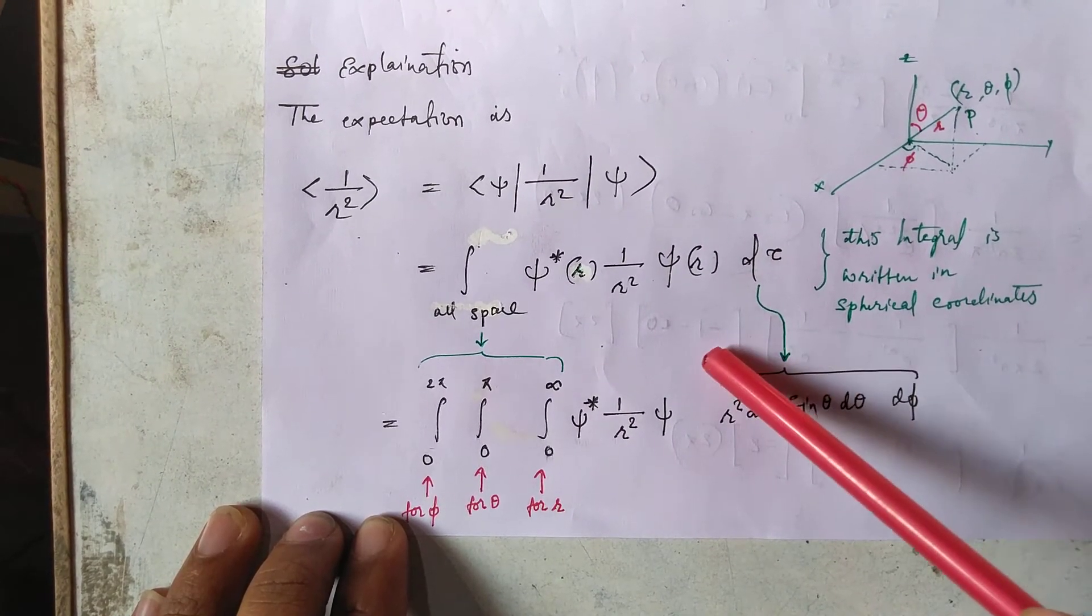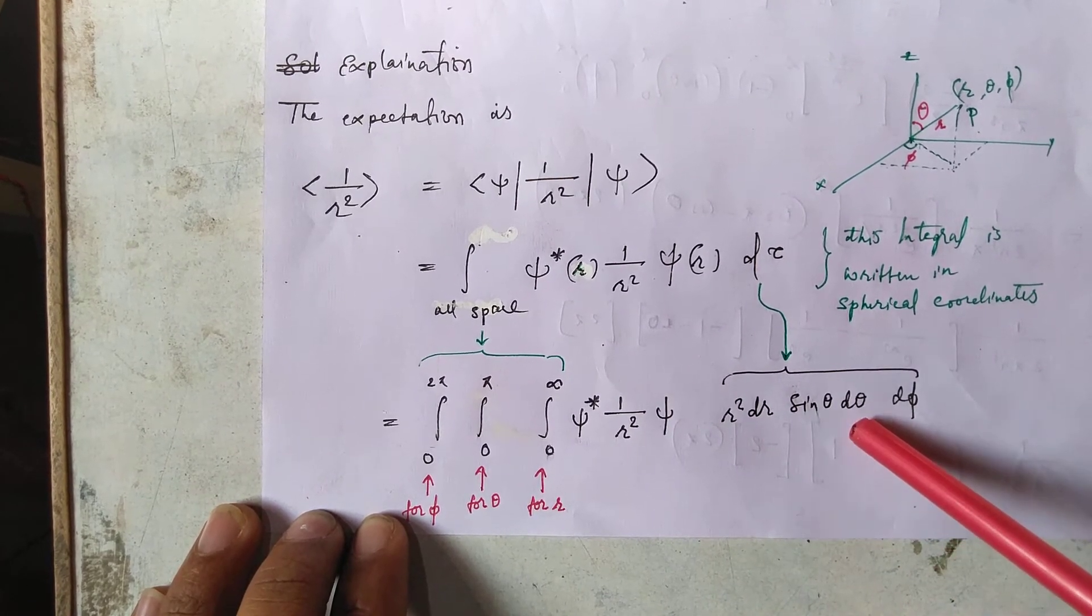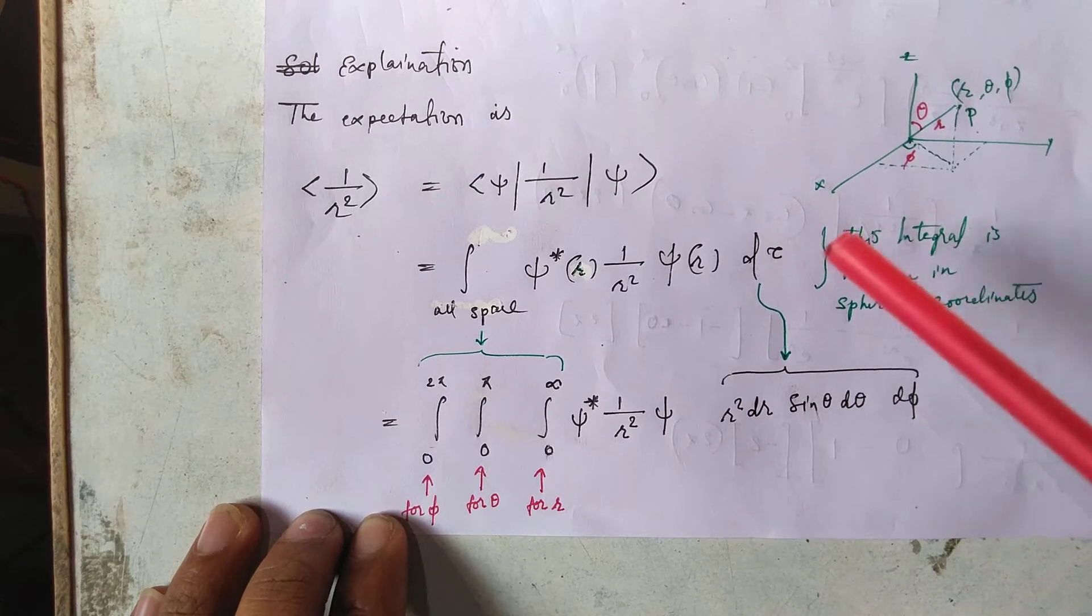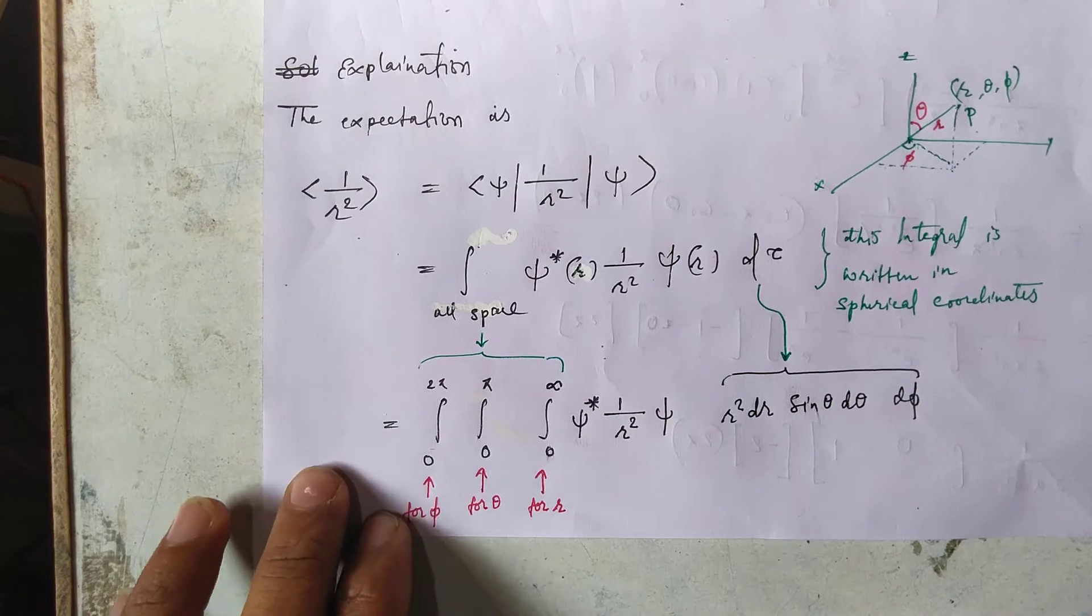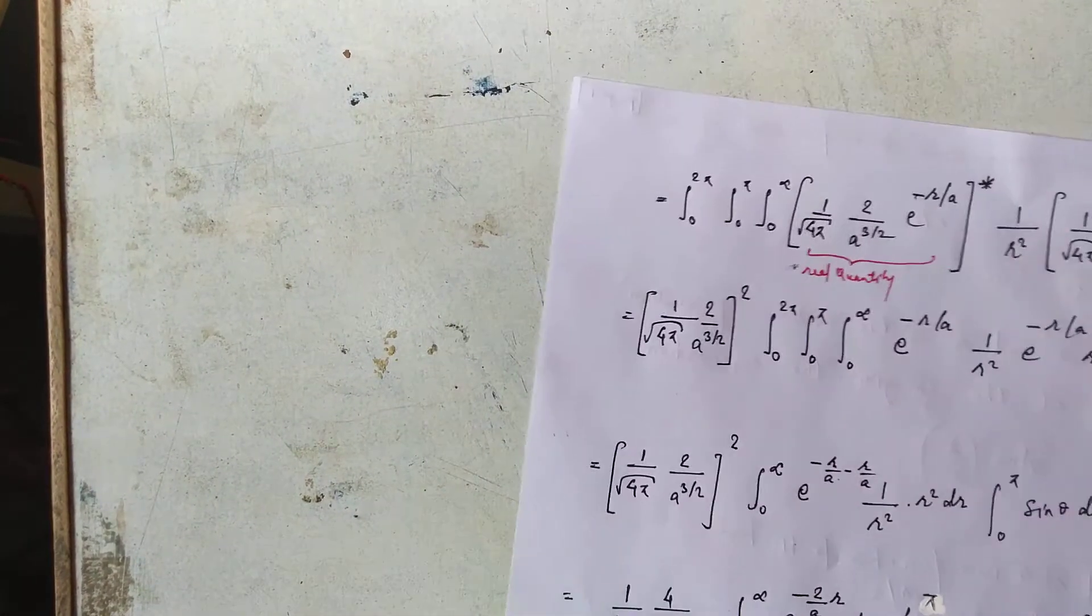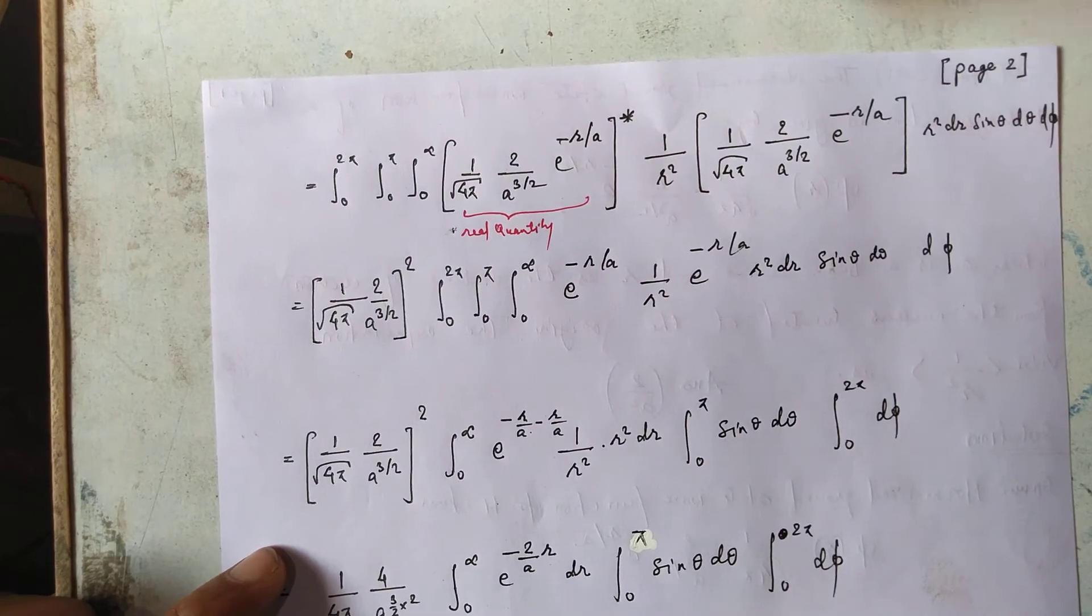This d tau is the volume element in the spherical coordinates. In spherical coordinates this volume element is written as you can see here: r squared dr sin theta d theta d phi, and this quantity is written as it is.